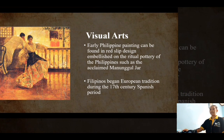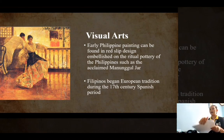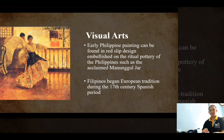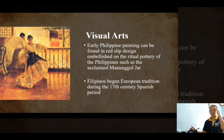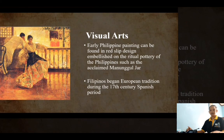Early Philippine painting can be found in reed slip designs embellished on the ritual pottery of the Philippines, such as the Manunggul Jar. Evidence of Philippine pottery-making dates as early as 6,000 BC, found in Sanga-Sanga Cave, Sulu, and at Cagayan. Pottery is the process and product of forming vessels and other objects with clay and other raw materials, which are fired at high temperatures to give them a hard and durable form.